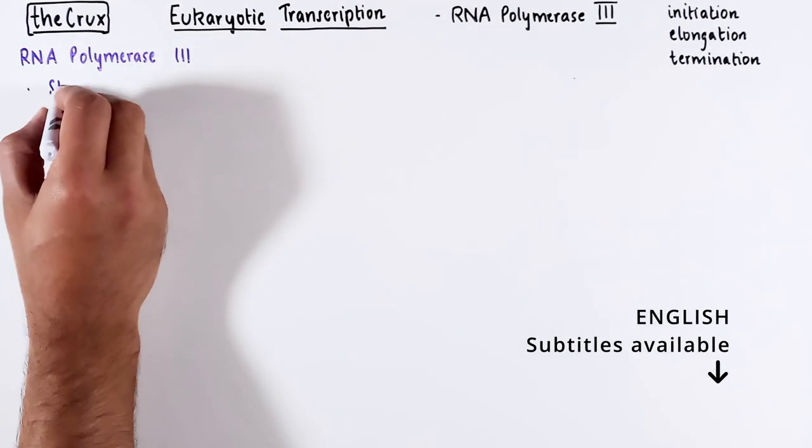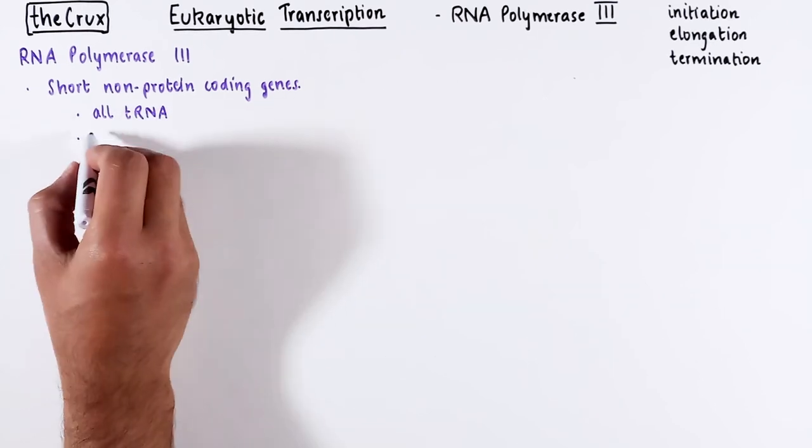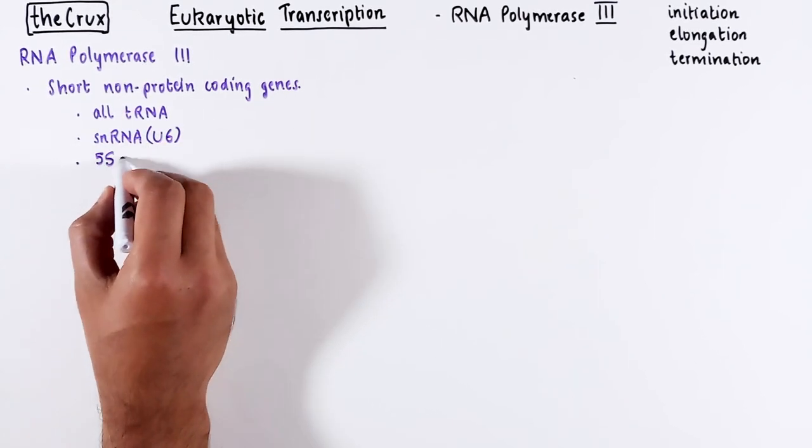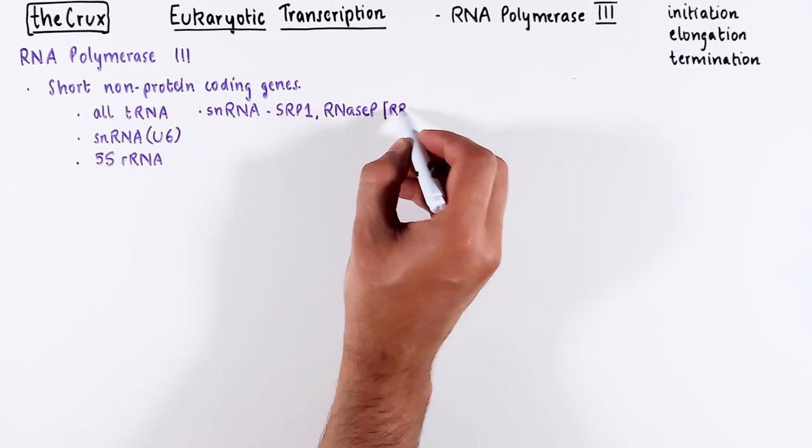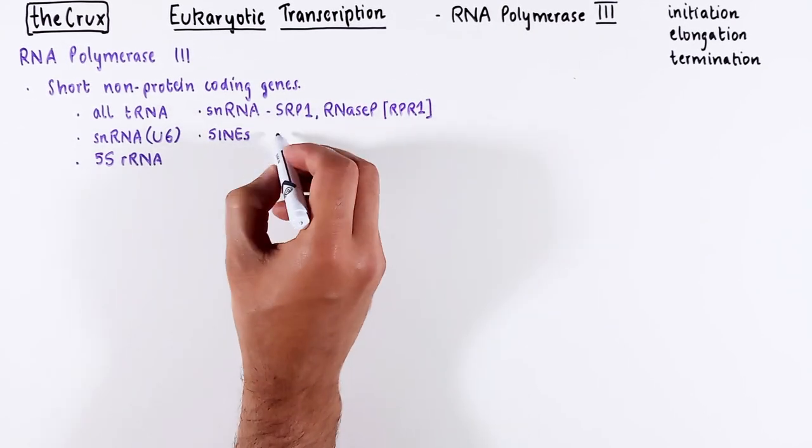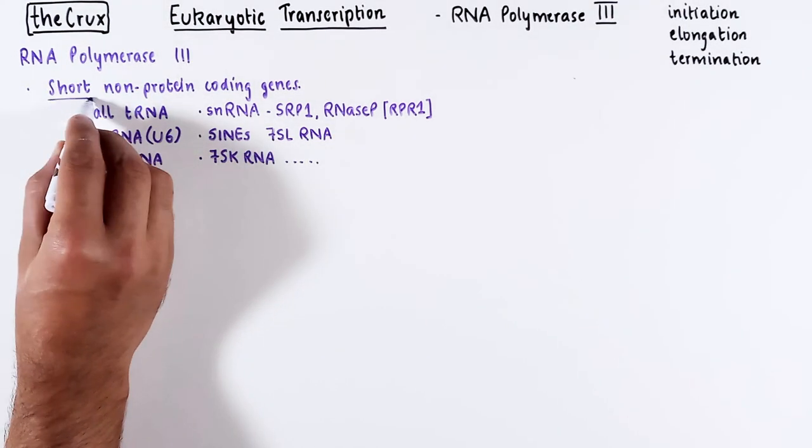RNA polymerase 3 is responsible for transcribing short non-protein-coding genes, such as transfer RNAs, small nuclear RNAs like U6, which is used in splicing, 5S ribosomal RNA, and other short nuclear RNAs. They are often less than 400 nucleotides in length.